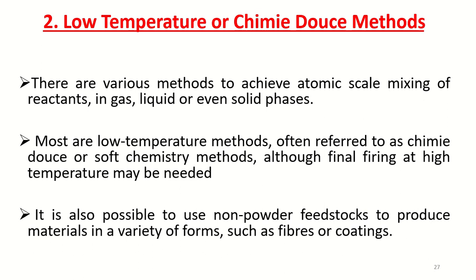Consequently, greater purity may be attainable especially if prolonged heating at high temperature can be avoided, since this is a frequent source of contamination from container materials and furnace atmosphere. More importantly, products with high chemical homogeneity are usually obtained, which often leads to improved properties or better understanding of the dependence of properties on structure, composition, and dopants. It is also possible to use non-powdered feedstock to produce materials in forms such as fibres or coatings.